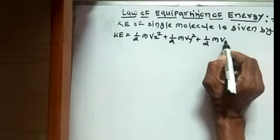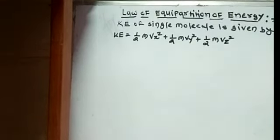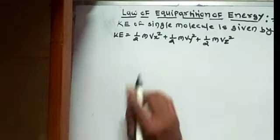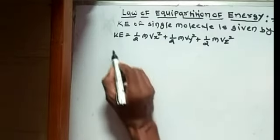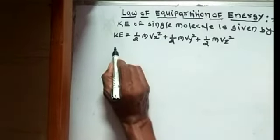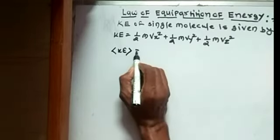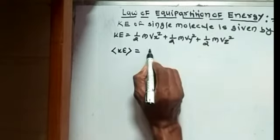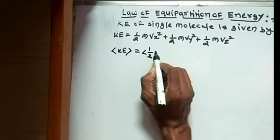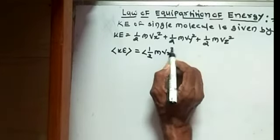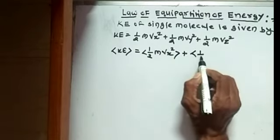We know that the average kinetic energy per molecule which is denoted by angle brackets is written as angle bracket kinetic energy is equal to angle bracket half m vx square plus angle bracket half m vy square plus angle bracket half m vz square.